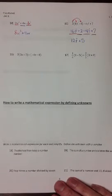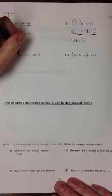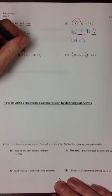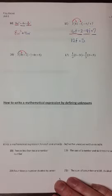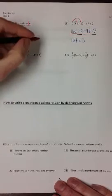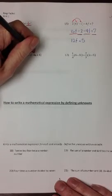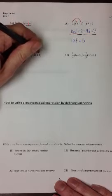In the next problem, we need to do the distributive property twice, distributing the 5 onto the 3n and the 2, and then distributing the negative sign onto the 4n and the 8.